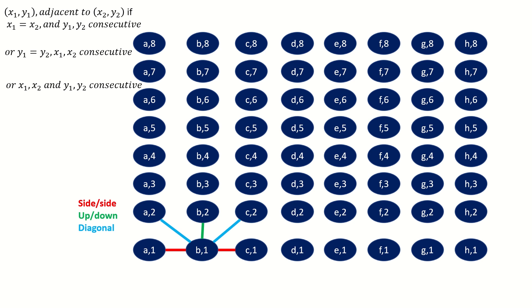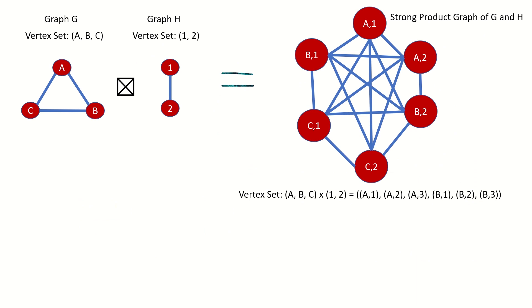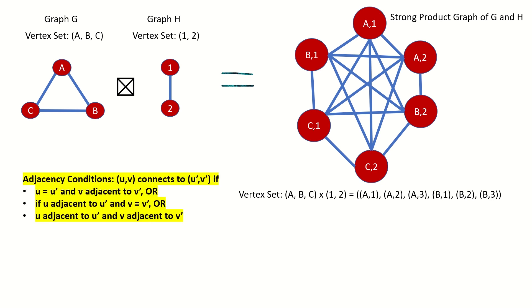Or finally they will connect if the two vertices have consecutive row numbers and consecutive column letters, that is x1 and x2 are consecutive letters and y1 and y2 are consecutive numbers. Doesn't this definition of ordered pairs remind you of the strong product of two graphs, where each vertex in the strong product represents an ordered pair of vertices from the factor graphs? And does our idea of connecting vertices in adjacent columns but the same row, or in adjacent rows but the same column, or in adjacent rows and adjacent columns remind you of the adjacency conditions of strong products? If these concepts feel similar, it's because they are, as we'll cover right now.